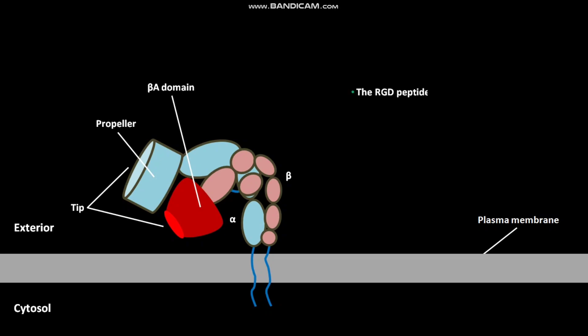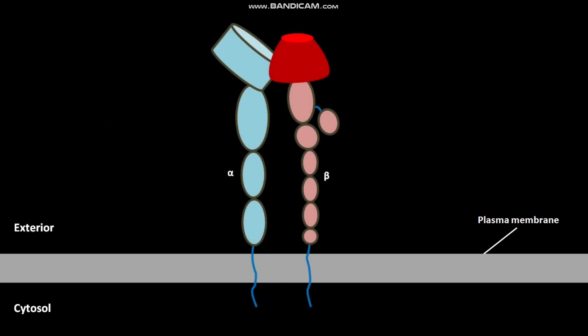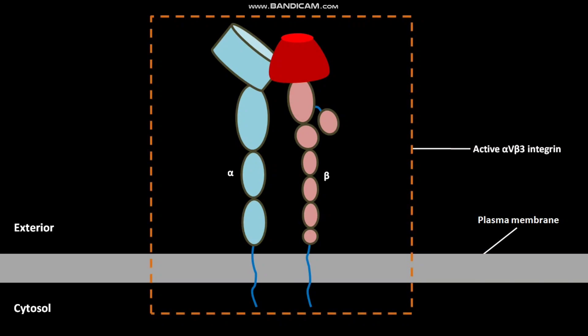The RGD peptide acts as a ligand for αβ3 integrin. The inactive αβ3 integrin undergoes conformational changes, due to which it becomes active. These conformational changes include straightening of the molecule and key movements near the propeller domain and βA domain.